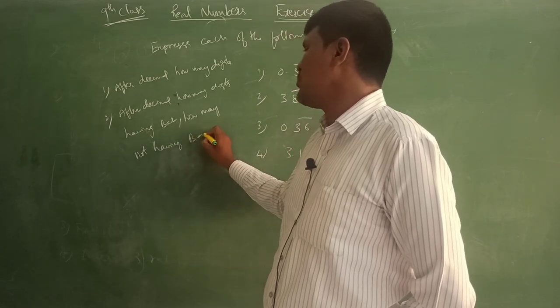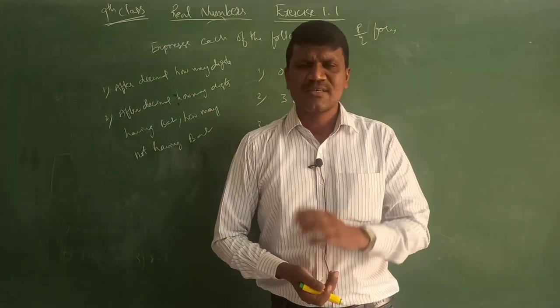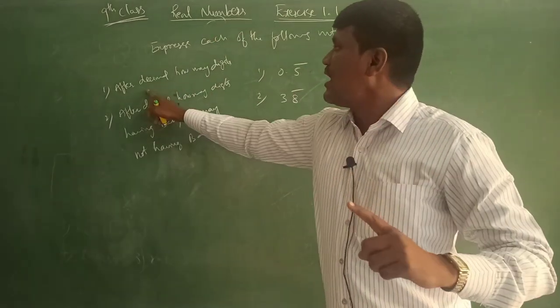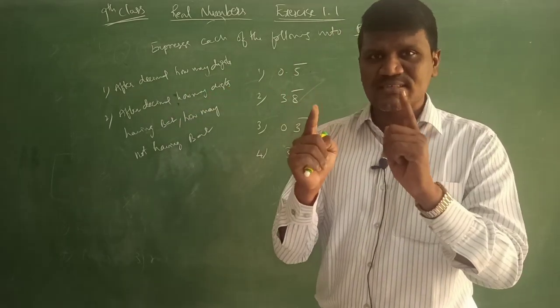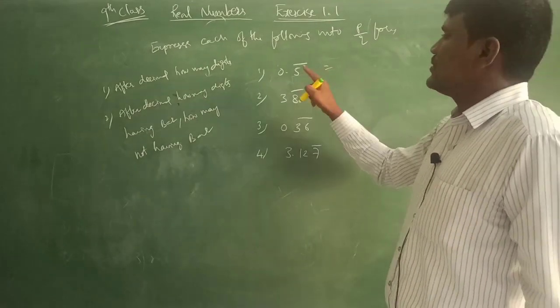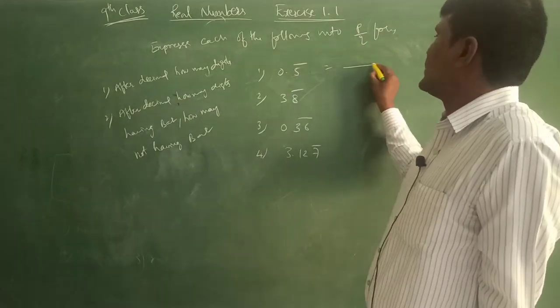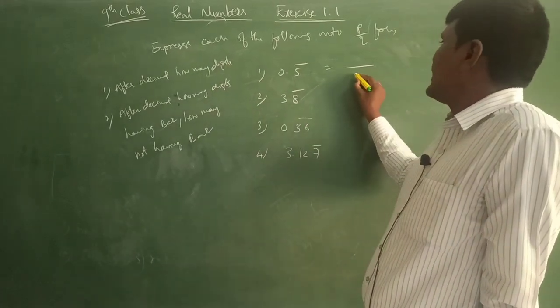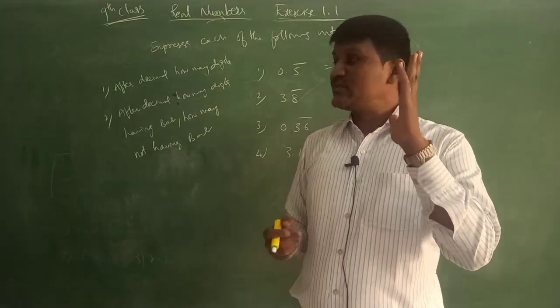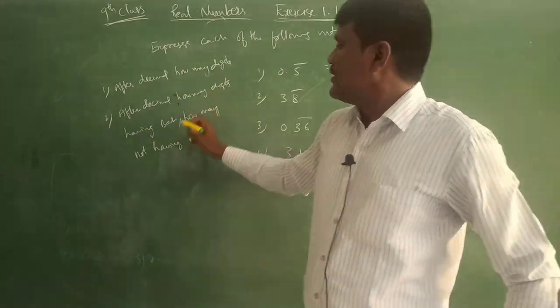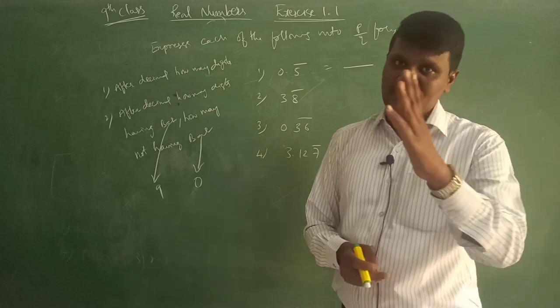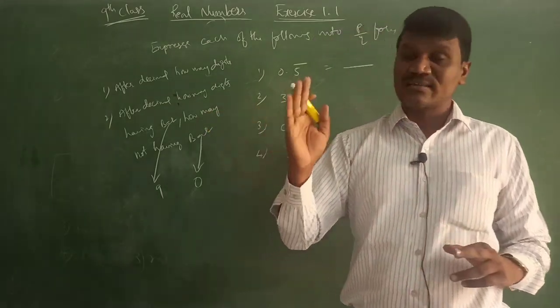How many digits having bar, how many digits not having bar - so this is the most important to write the denominator. The first one is after decimal, how many digits, so that decides what is there in the denominator. Now here, after decimal how many digits? Only one digit, right? So we have only one digit in the denominator. That one digit - if it has bar, write nine. Otherwise write zero.